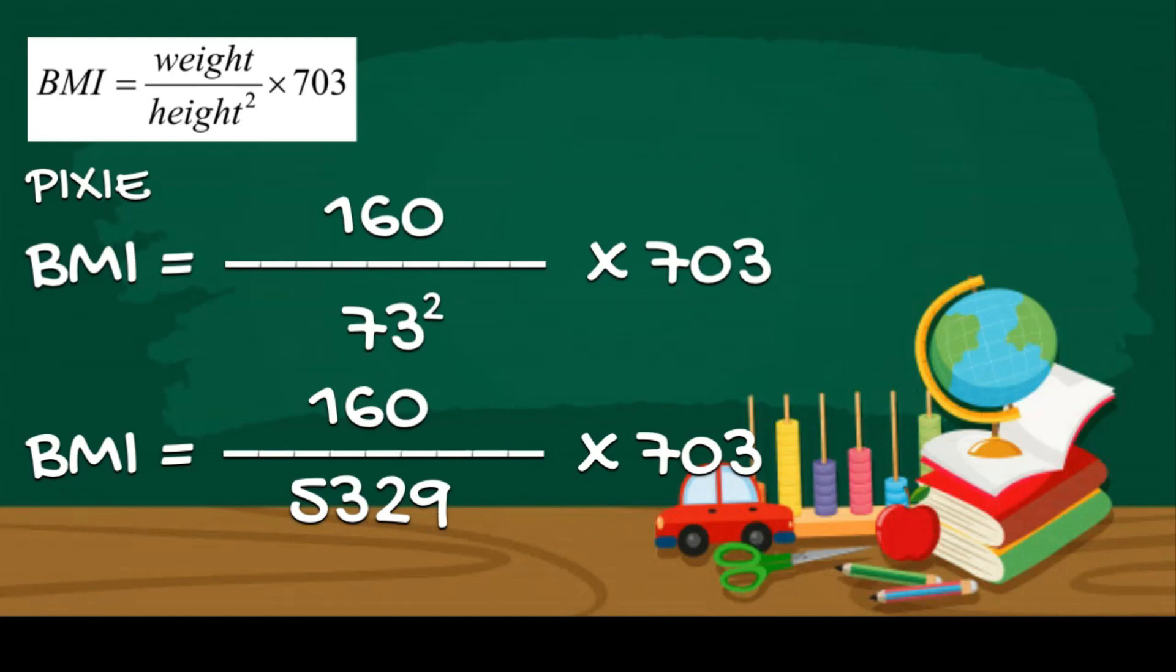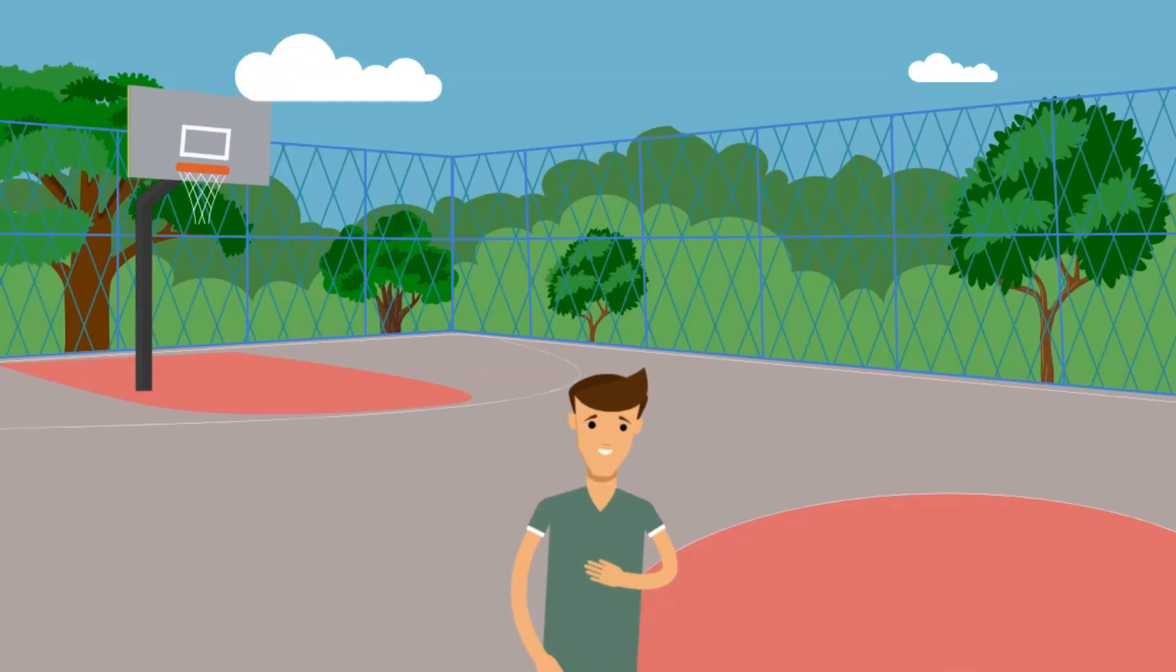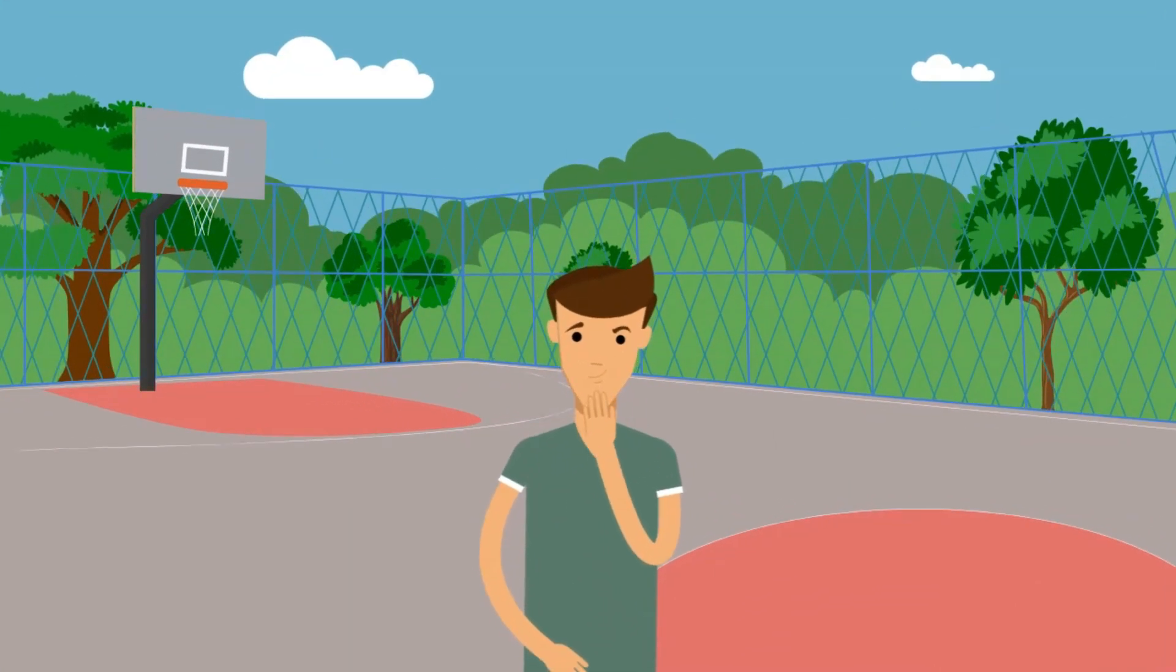To get the BMI, you need to finish solving the equation. 160 divided by 5329 times 703 is equal to 21. Now, is a BMI of 21 a good sign or bad?